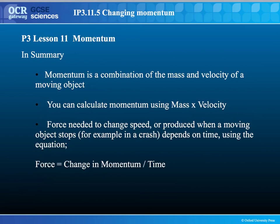In summary, momentum is a combination of the mass and velocity of a moving object. You calculate it using mass times velocity, remembering that the symbol for momentum is P — because M is already used for mass — and its units are kilograms meters per second. A force is needed to change an object's speed, or a force is produced when a moving object stops, for example in a crash. This depends on time and uses the equation: force equals change in momentum divided by time. Remember, in crashes the end momentum is often 0 as the car has come to a stop, and force is given in newtons.